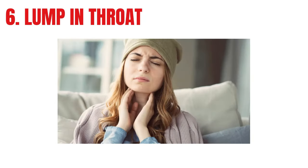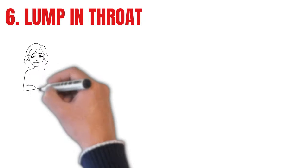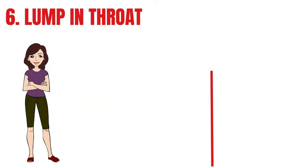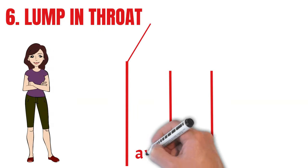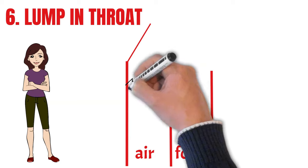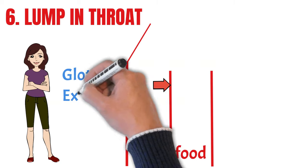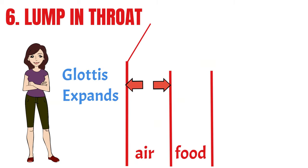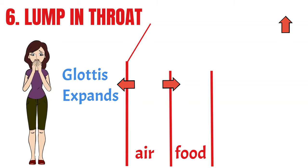Number six. A feeling of a lump in the throat, difficulty swallowing, or a choking feeling, are all caused by the glottis expanding to allow more air into the lungs, because your body thinks it has to run or fight. I have a whole video on this subject, so if you want to know more, click the link in the top right.